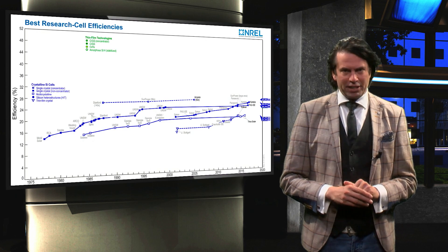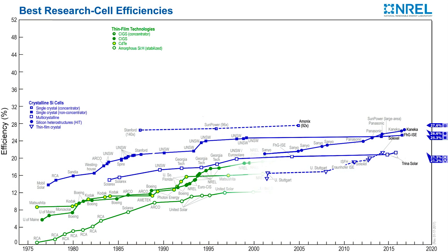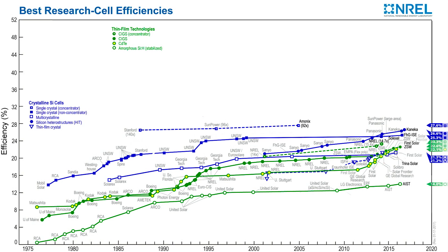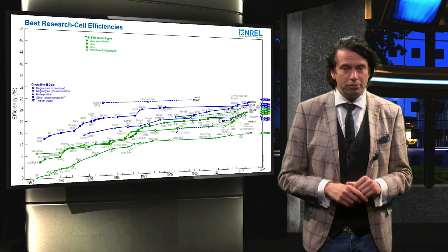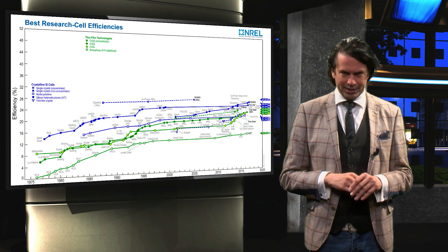The efficiency of these thin film technologies has increased steadily over the last couple of decades. The performance of CIGS and cadmium telluride solar cells is very similar, with a record efficiency of 22.6% for the CIGS solar cells from ZSW and 22.1% for the cadmium telluride solar cell from First Solar. The performance of thin film silicon solar cells is lower, with a stabilized record efficiency of 14%. The addition of the term 'stabilized' will be explained later in this course.